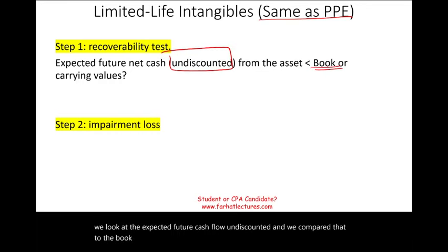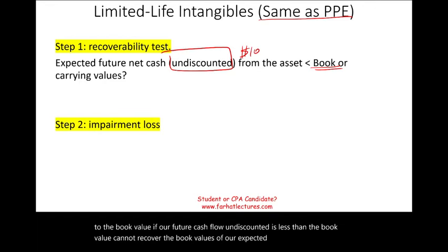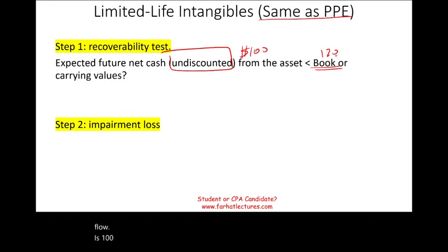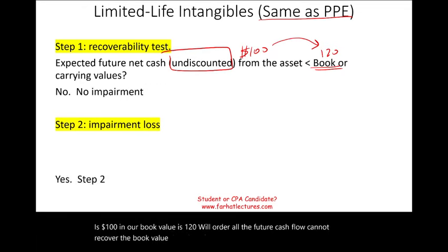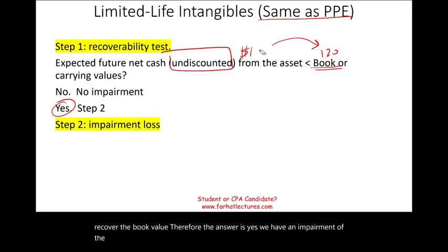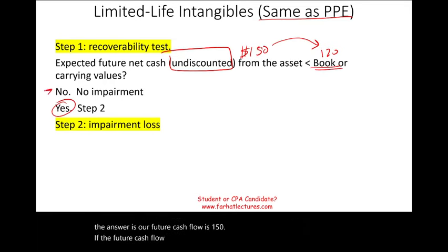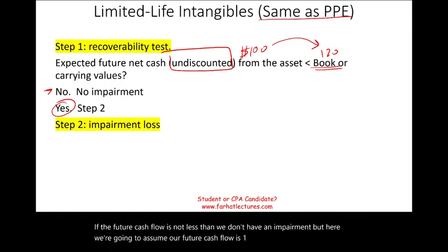If the undiscounted future cash flow is less than the book value, we cannot recover the book value. For example, if expected future cash flow is $100 and book value is $120, all future cash flow cannot recover the book value — therefore we have an impairment. If the future cash flow is not less, such as $150, then there's no impairment. If there is an impairment, we go to step two.